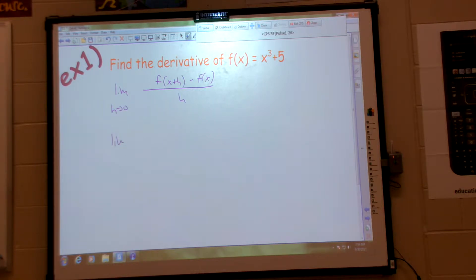F of X plus H minus F of X all over H. So I have limit H goes to zero. X plus H cubed plus five. There's my F of X plus H minus F of X. All over H.